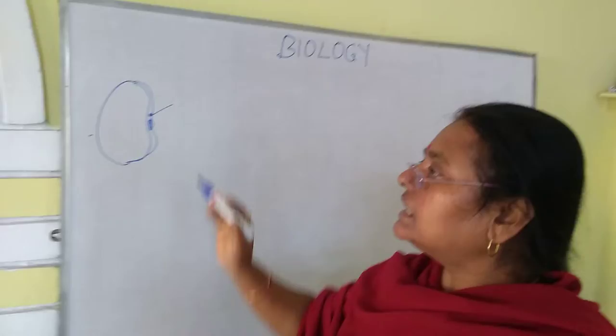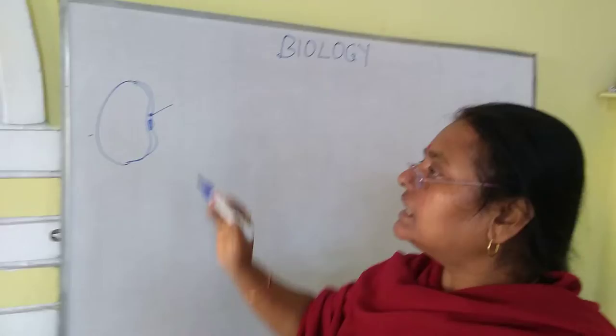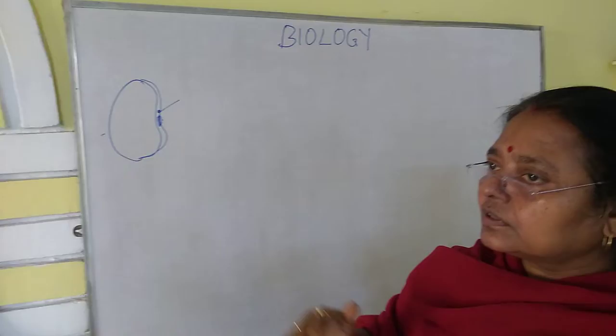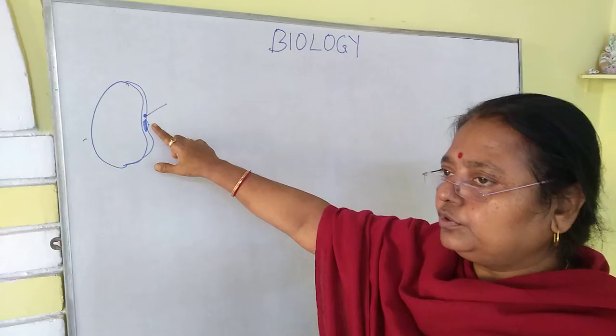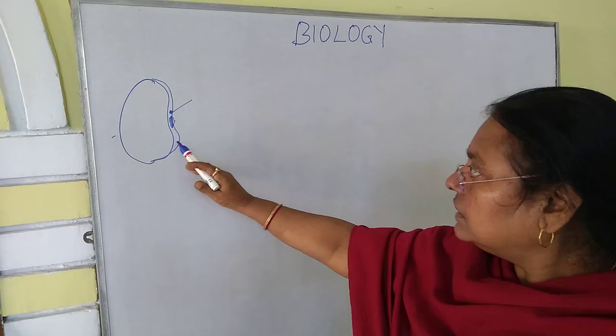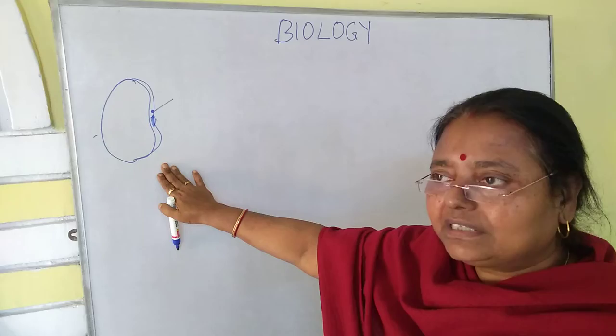The micropyle is the same micropyle through which the pollen tube had entered into the embryo sac. The hilum marks the point of attachment of the ovule with the wall of the ovary — the funicle was attached to the ovule and that mark remains as the hilum. It has got the integuments that were present in the ovule, and they remain but are now called testa and tegmen.